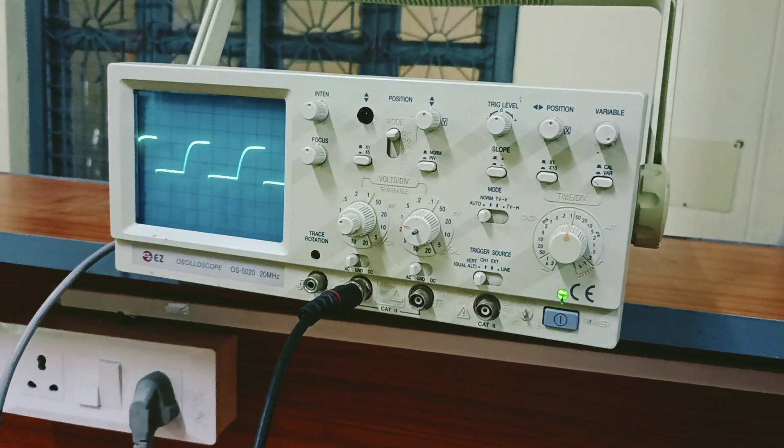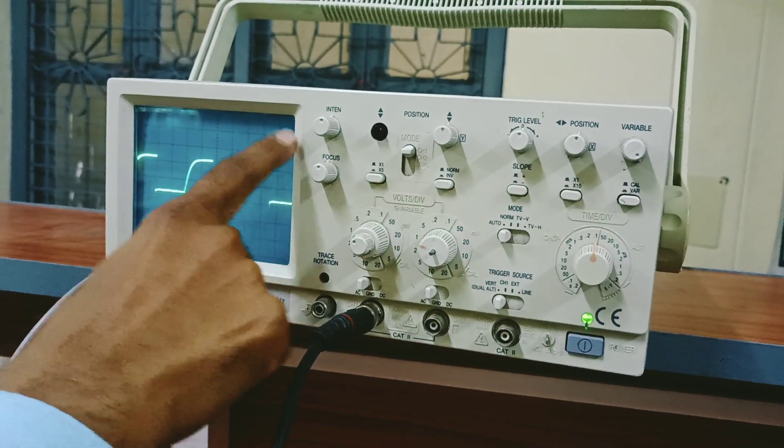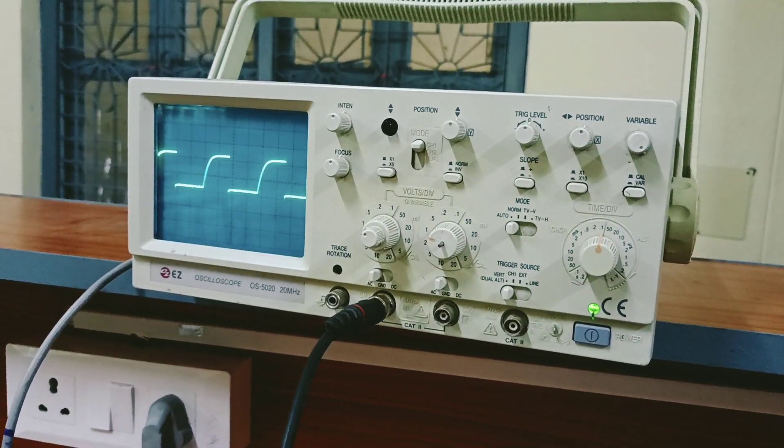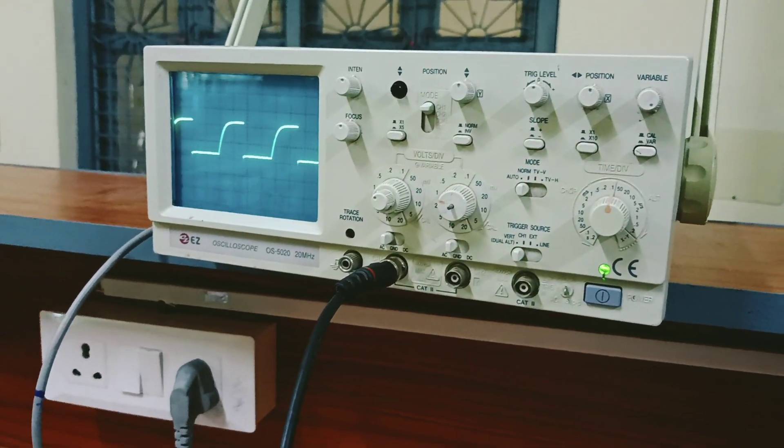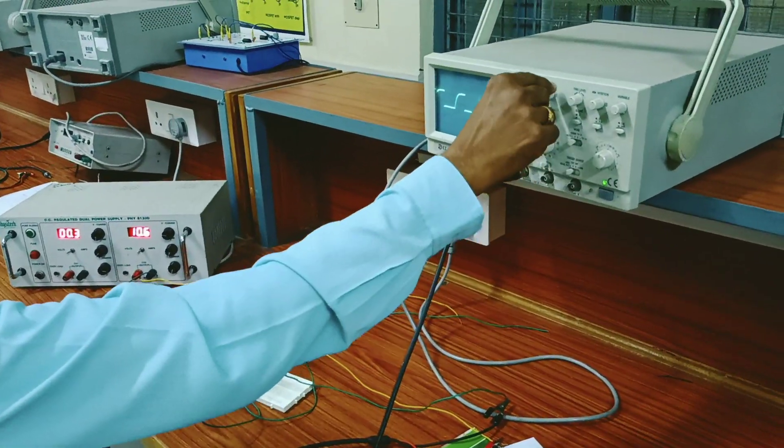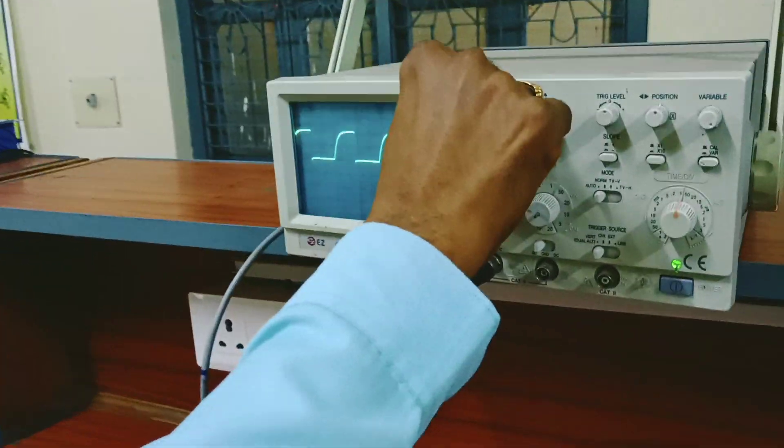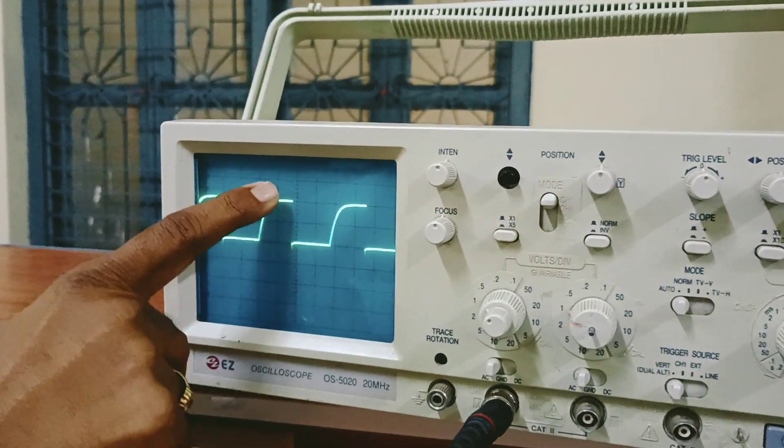So now reduce the amplitude. We can see some waveform, isn't it? So it is showing you a square wave. This curve we get because of rounding, this can be eliminated. This is the output of an astable multivibrator, which is a square wave.